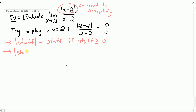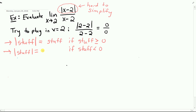The other situation is if the stuff is negative — if the stuff is less than 0 — then the absolute value makes it positive. One way to make it positive is to write another negative in front of the stuff. Because if the stuff is negative and you multiply it by negative 1, that makes it positive. So I'm going to use this idea to write down what the absolute value of x minus 2 is going to be.